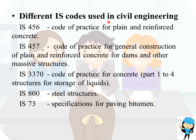Different IS codes used in civil engineering: IS 456 is the most common — code of practice for plain and reinforced concrete. IS 457 is the code of practice for general construction of plain and reinforced concrete for dams and other massive structures. IS 3370 is the code of practice for concrete structures for storage of liquids (Parts 1–4). IS 800 is for steel structures. IS 73 is the specification for paving bitumen.